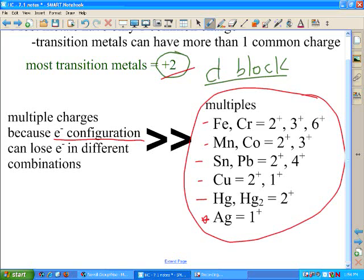Platinum, don't know. Plus two then. So the only, everything's a plus two except for these. Now, are there more exceptions than the multiples I have listed? Yes, but these are the only ones that you have to worry about. Iron, chromium, manganese, cobalt, tin and lead, copper, mercury, the two different types of mercury, and silver. And I'm going to show you a different chart here in a little bit that will help you remember those.